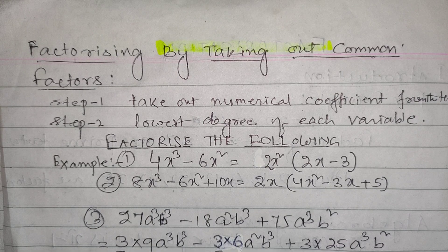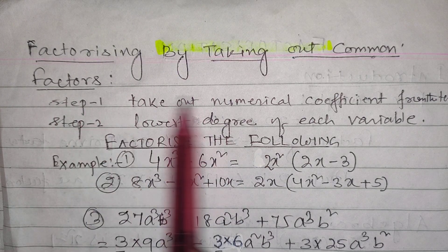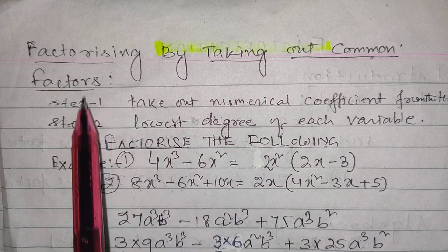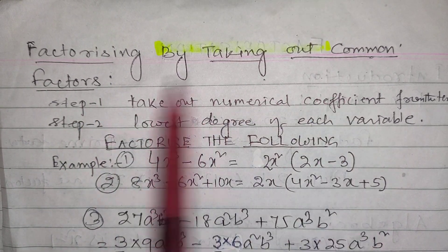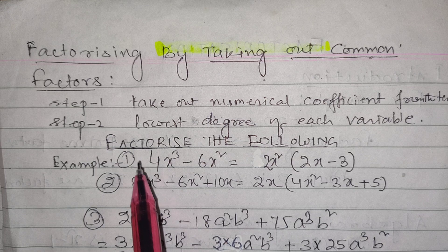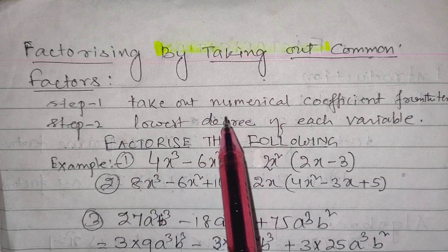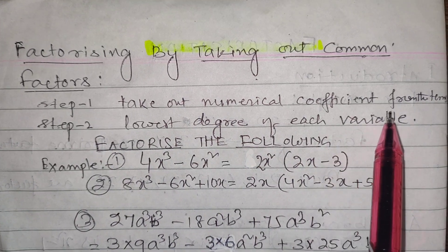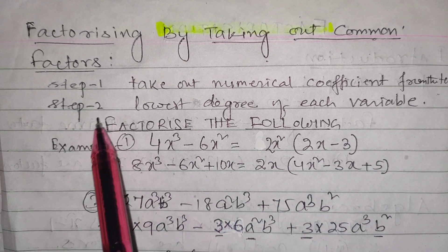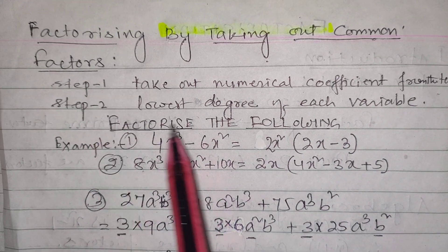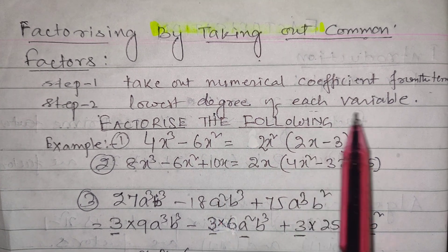Now let us discuss factorizing by taking out common factors. The first step is to take out the numerical coefficient from the terms. The second step is to identify the lowest degree of each variable.